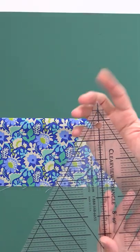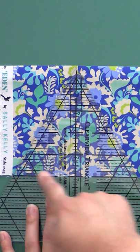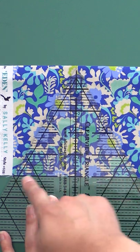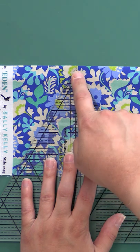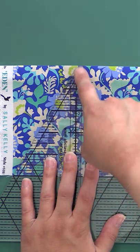I'm gonna take my equilateral triangle ruler. I want to make sure that I've got the bottom of my strip lined up with the inch line, and then the top should be even with my tip here.